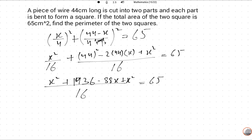Now 2x². 2x² because x² and x² will be added. Minus 88x plus 1936 is equal to 65.